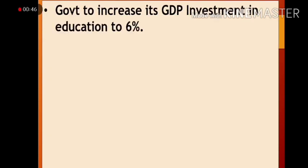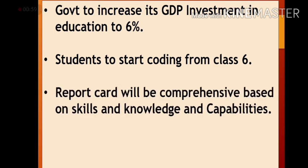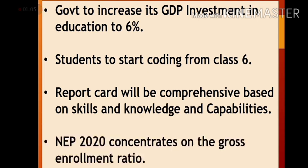The government plans to increase its GDP investment in education to six percent. Students will start coding from class six. The report card will be comprehensive, based on skills, knowledge, and capabilities. National Education Policy 2020 also concentrates on the gross enrollment ratio.